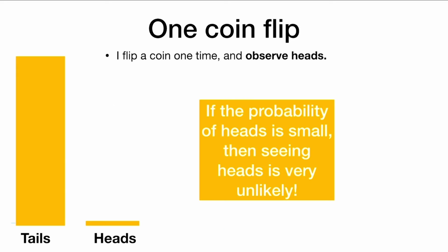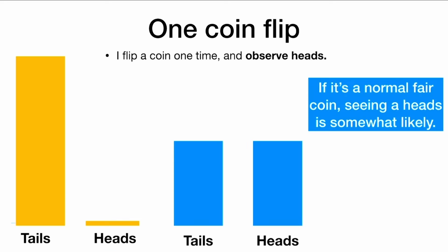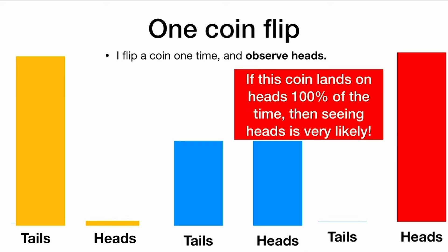So let's say we see a coin flip. I flip a coin and I observe heads. I want to learn what the probability of heads is. And if the probability of heads is small, then seeing heads would be very unlikely. But if it's a normal fair coin, seeing heads is somewhat likely. And if this coin lands on heads 100% of the time, then seeing heads is very, very likely.